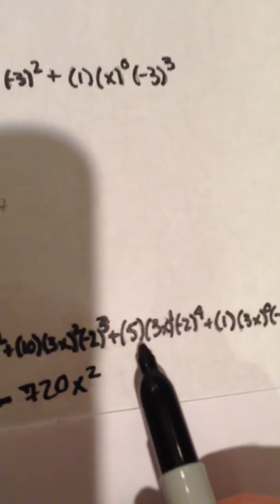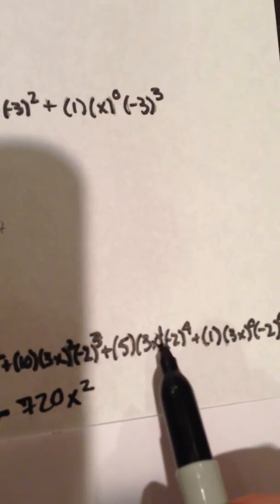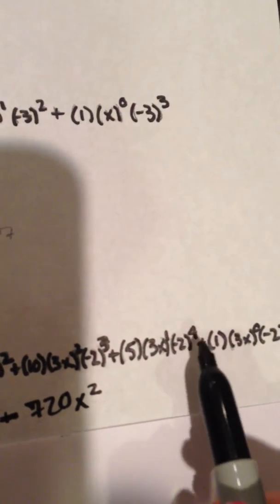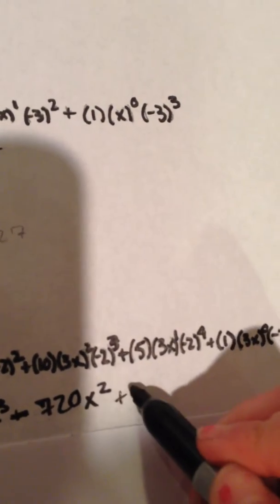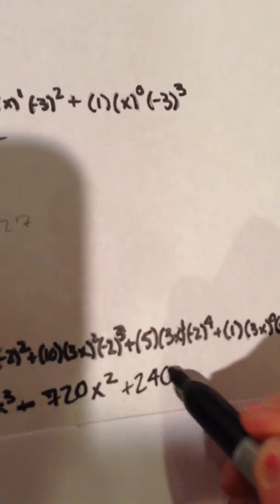We have five times 3x to the first power times negative two to the fourth power, which gives us positive 240x.